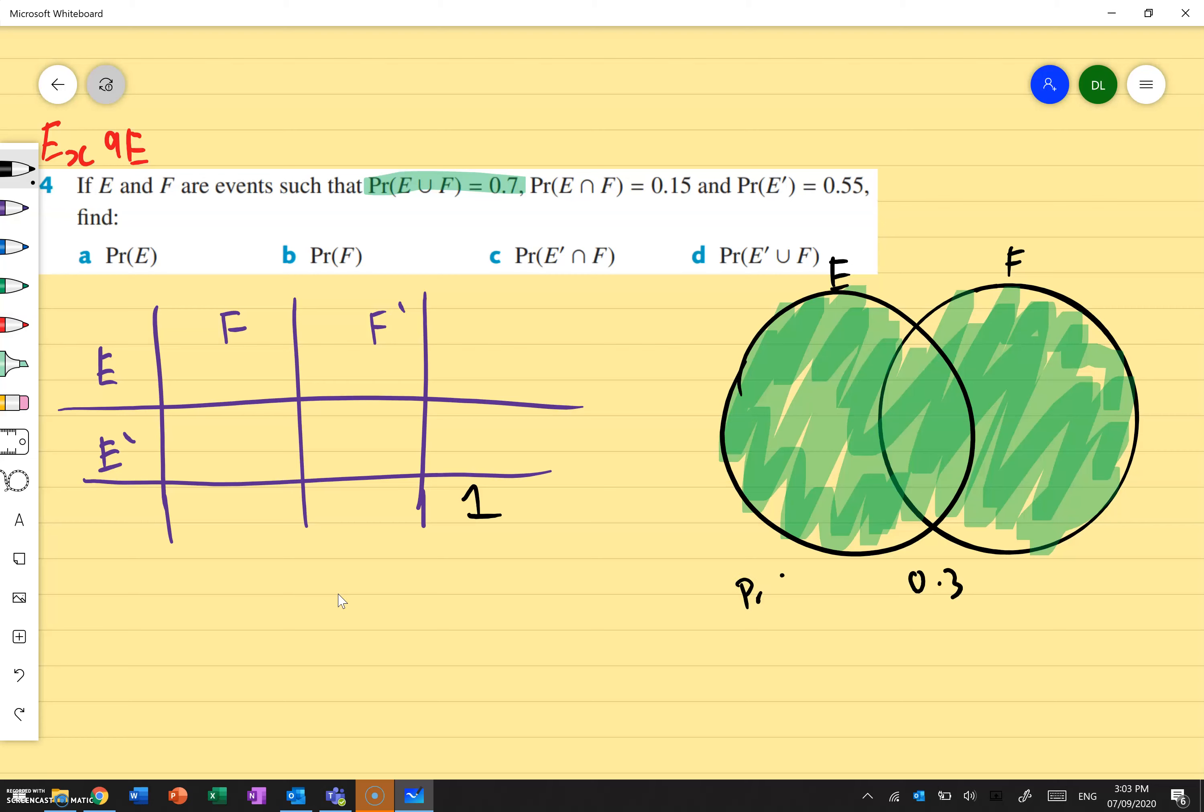So if everything on the inside is 0.7, that would mean that this on the outside is 0.3, or in other words, the probability of not E intersecting with not F. And that gives me 0.3. So I can actually fill that in. I know that's 0.3 right there. And that's from that one bit of information.